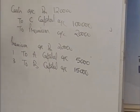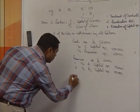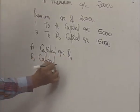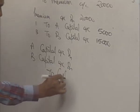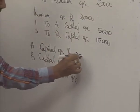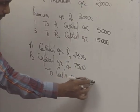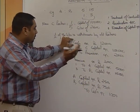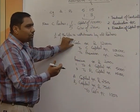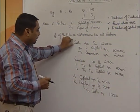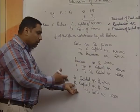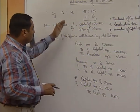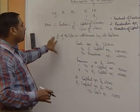The next step: half of the goodwill is withdrawn by old partners. When partners withdraw the goodwill, debit them. Entry: A Capital Account debit, B Capital Account debit to Cash Account. Half of 5,000 is 2,500 for A, half of 15,000 is 7,500 for B, total 10,000. When cash came in, we debited cash because whatever comes to the business is debited. Now cash goes out, so cash is credited — whatever goes out from the business is credited.